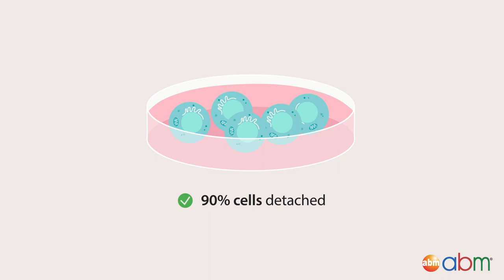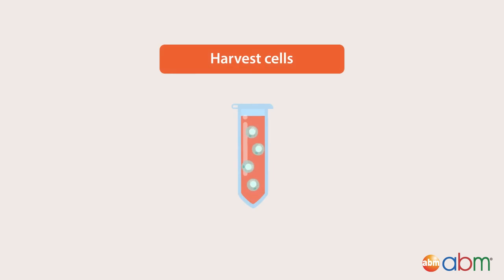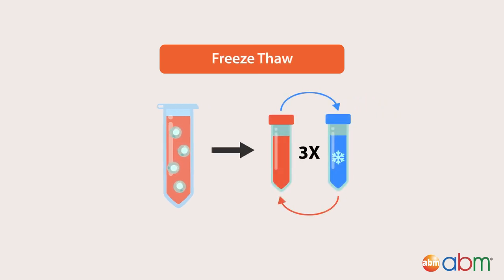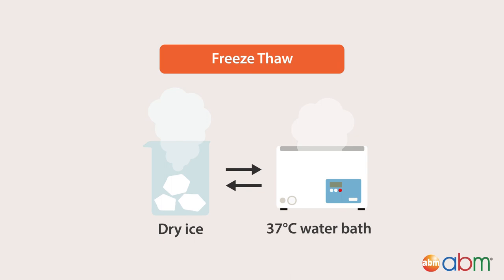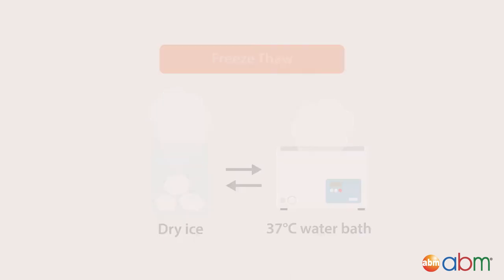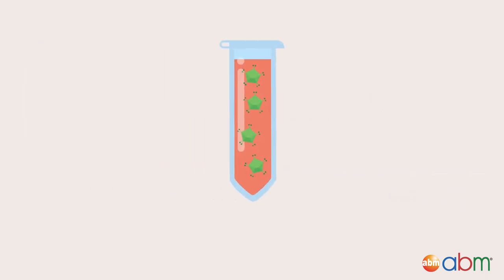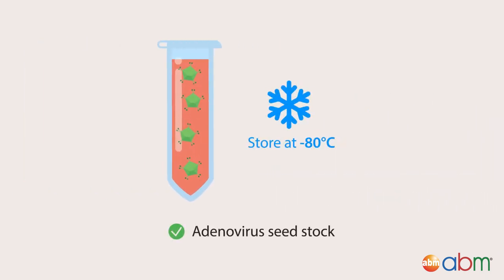Subculture them from the 6-well plate into a 15 cm plate with 20 ml of complete media. Monitor your cells over the next 7 to 14 days for signs of cytopathicity, characterized by rounded, swollen cells that detach from the plate. When approximately 90% of the cells have detached, harvest the cells in a 15 ml conical tube. Freeze and thaw the cells 3 times to ensure complete lysis by alternating between dry ice and a 37 degrees Celsius water bath. You have now isolated your adenovirus seed stock.